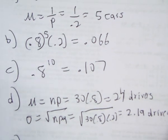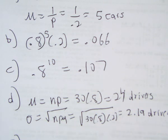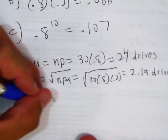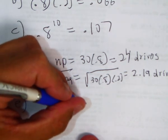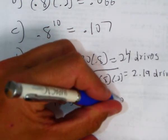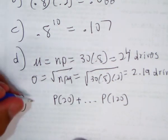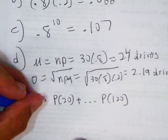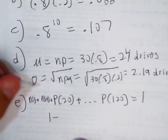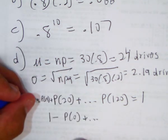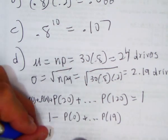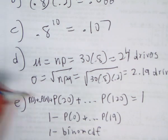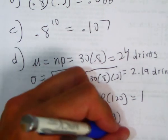And then E, if they stop 120 cars, what's the probability they find at least 20 drivers not wearing their seatbelts? We can do the probability of 20 all the way up to the probability of 120 not wearing their seatbelts, which is really 1 minus the probability of 0 all the way up to the probability of 19, which is 1 minus binomial CDF. We do 120, 0.2, and then 19.